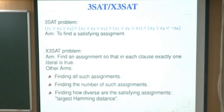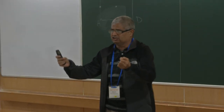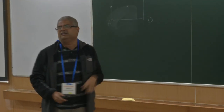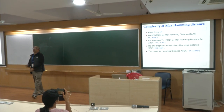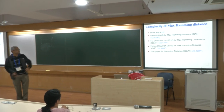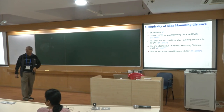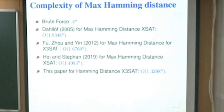The particular problem we are going to study is how diverse these assignments can be — specifically, what is the maximum Hamming distance between two assignments which satisfy the requirements. By brute force you consider all possible pairs of satisfying assignments and check their distance, which takes about 4^n time. For maximum Hamming distance for XSAT, Dhalov did it in time about 1.83^n; for X3SAT the earlier bound was 1.676^n, improved this year to 1.49^n; in this talk we will do 1.3298^n.